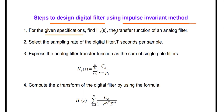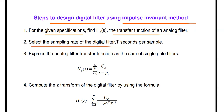The steps to design the digital filter using the impulse invariant method are as follows. Step one: from the given specification, find the transfer function of the analog filter using Butterworth approximation or Chebyshev approximation — H(S), the analog transfer function. Step two: select the sampling rate T of the digital filter. The T value will be given in the problem, or otherwise take T as one second per sample.